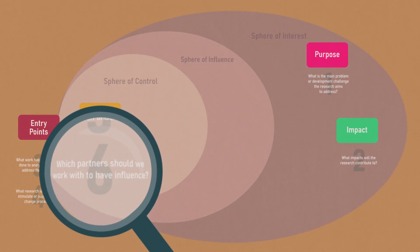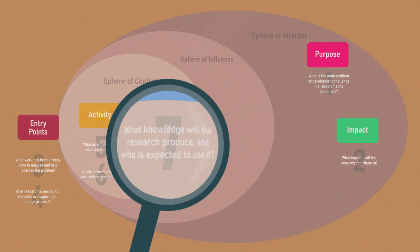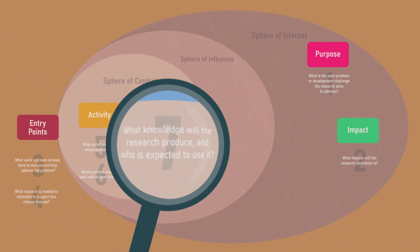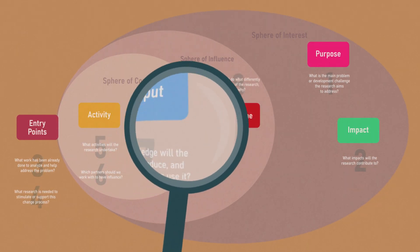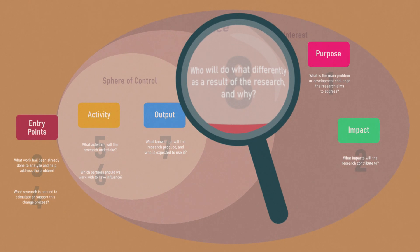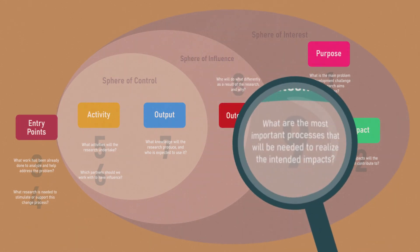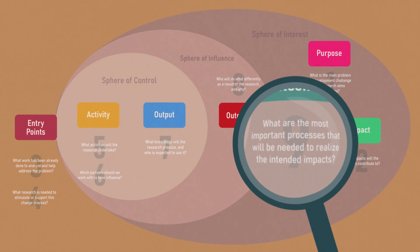Next, consider which partners should we work with to have influence. What knowledge will the research produce and who's expected to use it? Who will do what differently as a result of the research and why? What are the most important processes that will be needed to realize the intended impacts?